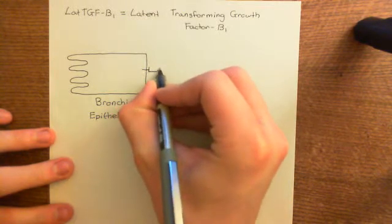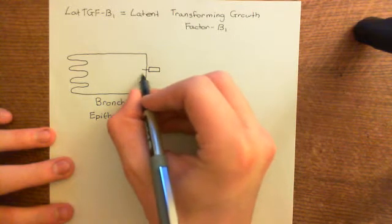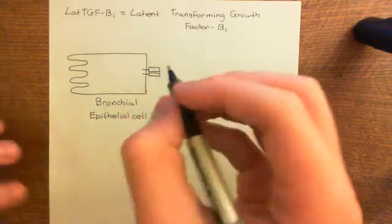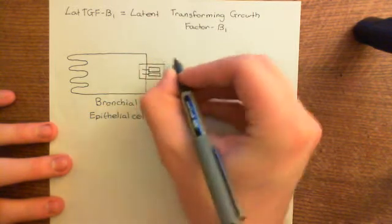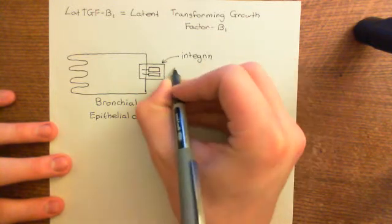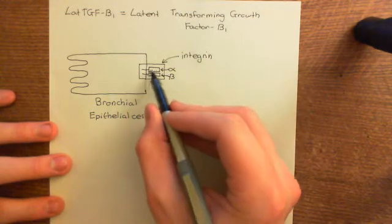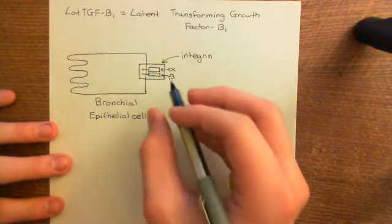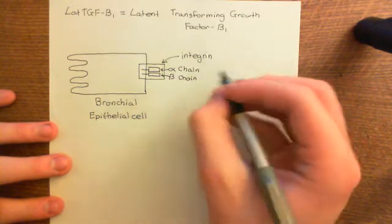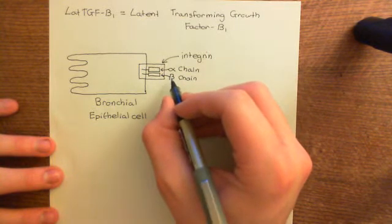Integrins are a type of cell adhesion molecule involved in attaching cells to other cells and also to the extracellular matrix. All integrins consist of two subunits: an alpha subunit and a beta subunit, both implanted into the cell membrane. There are a large number of different alpha and beta subunits available.